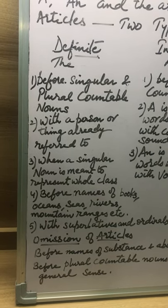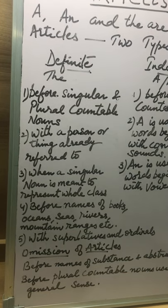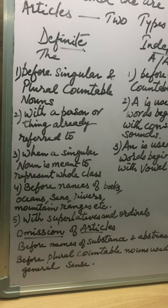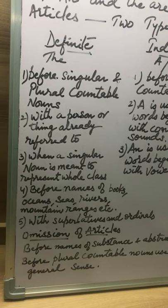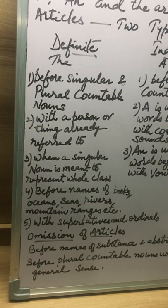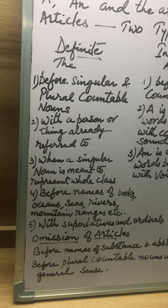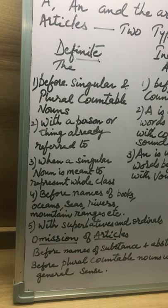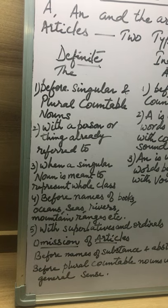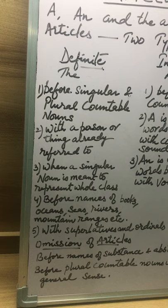'The' is also used with musical instruments — for example, 'he can play the flute'. It is used before an adjective when the noun is understood, such as 'the poor are always with us'. The article is also used before a noun to give emphasis.